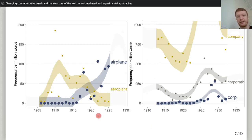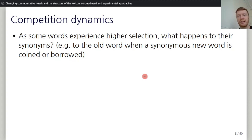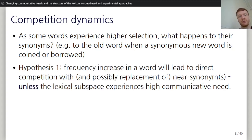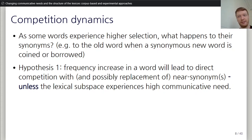So on the one hand, you have cases where similar words compete and one wins. In other cases, similar words survive together. The question is: as some words experience higher selection, what happens to their synonyms? The hypothesis is that frequency increase in a word will lead to direct competition — like airplane — and possibly replacement of near synonyms, unless the lexical subspace experiences high communicative need. When people need to talk about something, like corporations in the 1920s, then words with similar meanings are more likely to survive together. We can test that using corpora.